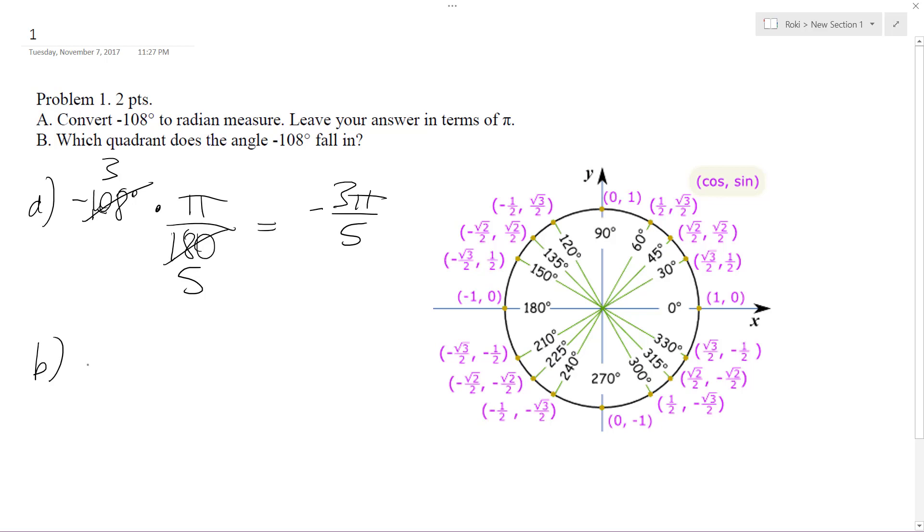And then which quadrant is it in? It's in quadrant 3. And the reason why, if you look at the unit circle here, it loops around. Negative 108 degrees is supposed to be like 18 degrees from 270, so it goes clockwise as opposed to counterclockwise.